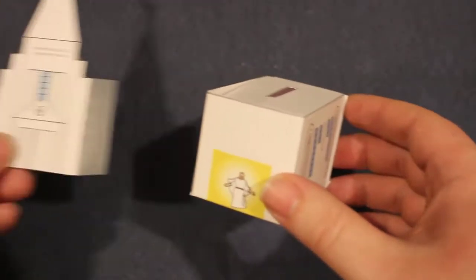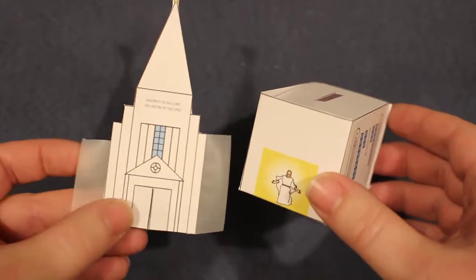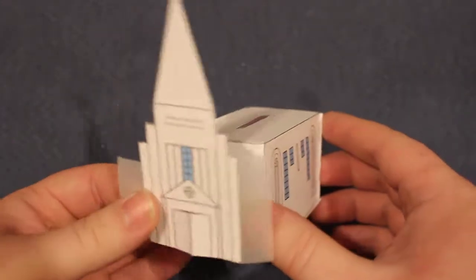And then you just take this front piece, put two pieces of tape on it, and attach it to the front here.